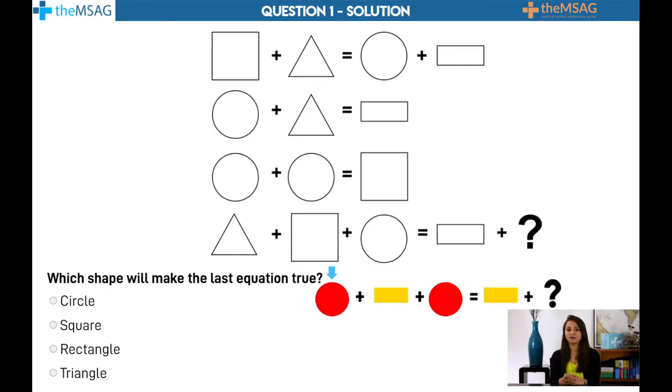Scan the equations again to find which other shapes can be substituted into our new equation. The third equation features two circles, just as our final equation now does. If two circles equal the square, then substitute two circles for a square into our new final equation.